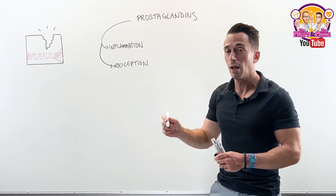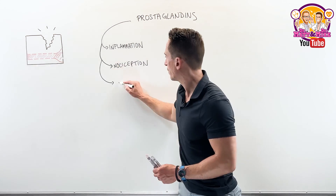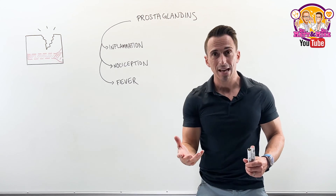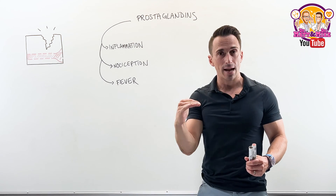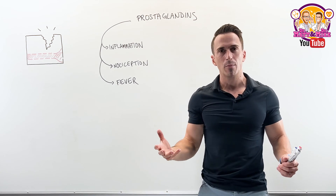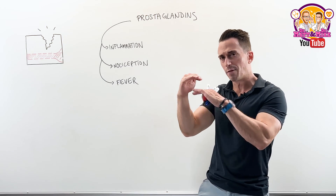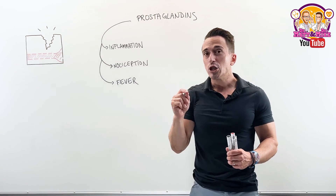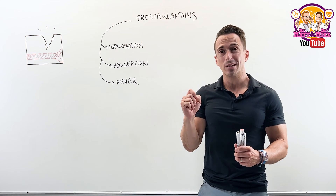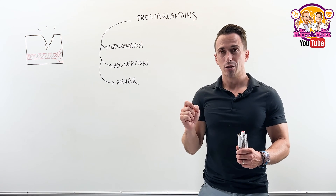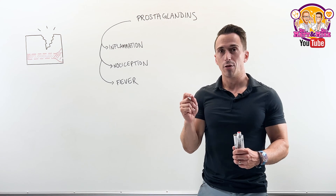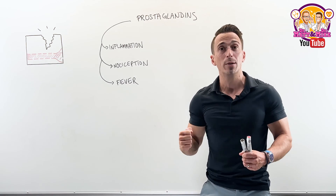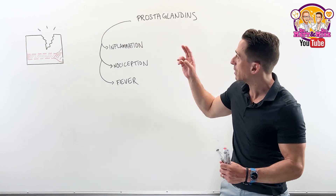What else do prostaglandins do? Think fever. Prostaglandins can travel to the brain — specifically the hypothalamus — and change our thermostat. Our internal body temperature should be about 37 degrees, but prostaglandins can crank it up to 38, 39, 40 degrees, making us think we're not hot enough, so we shiver. This is in part due to prostaglandins.